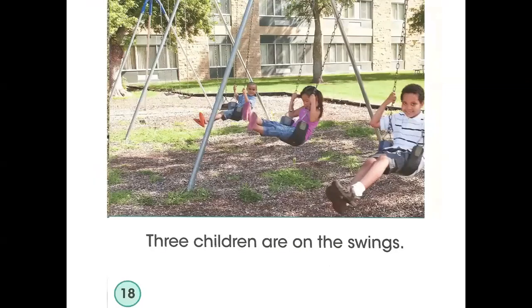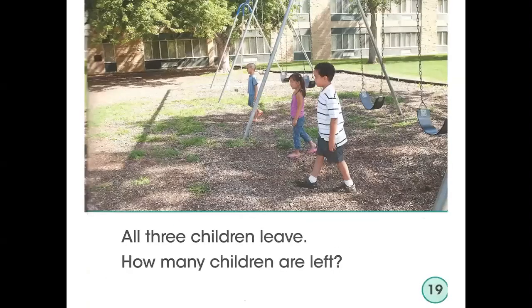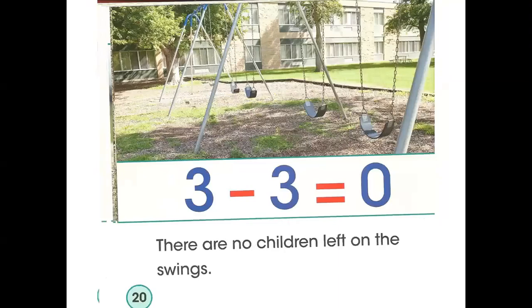Three children are on the swings. All three children leave. How many children are left on the swings? There were three there, now three are leaving. How many children are left on the swings? Three take away three equals zero. There are no children left on the swings.